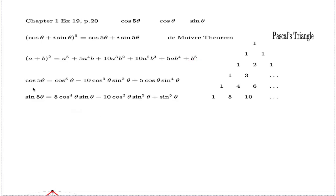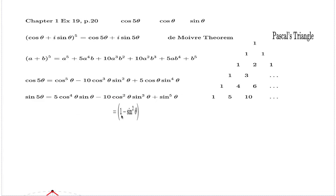So we did more than the question asked for — we found not only cos 5θ but also sine 5θ. But we will take this question even further. What I'll do next is take this last identity and make the right-hand side cosine-free. I want to get rid of all the cosines, which is easy because cos θ equals √(1 − sin² θ), and cos⁴ θ is (1 − sin² θ)².